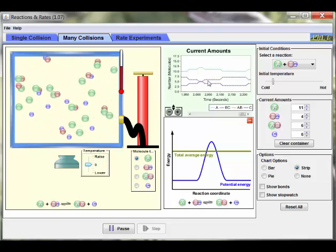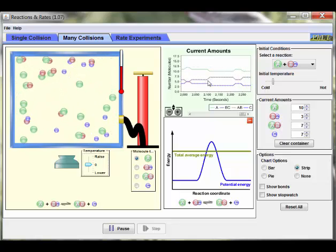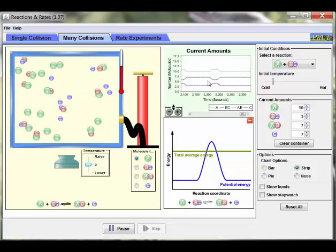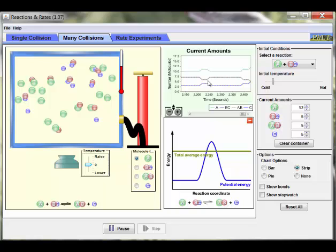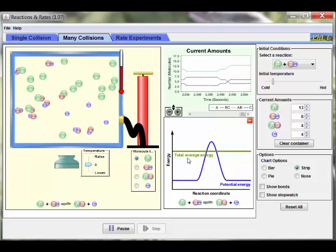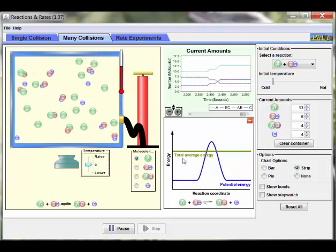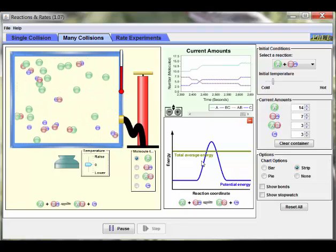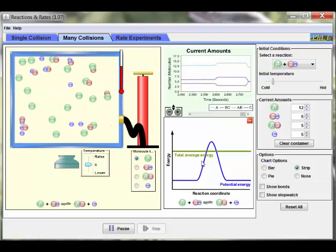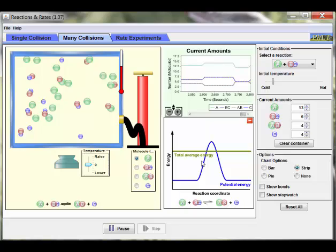As we watch this, we can ask ourselves, well, once a product is formed, does it always stay a product? And how would we know that that's the case? Also, it would be good to ponder, well, why is this line, the green line, listed as total average energy, as opposed to total energy like it was in the single collision case? And what do you think might happen if we added some more AB to the mixture? Well, perhaps that would be something good for you to try, as we've come towards the end of our screencast.